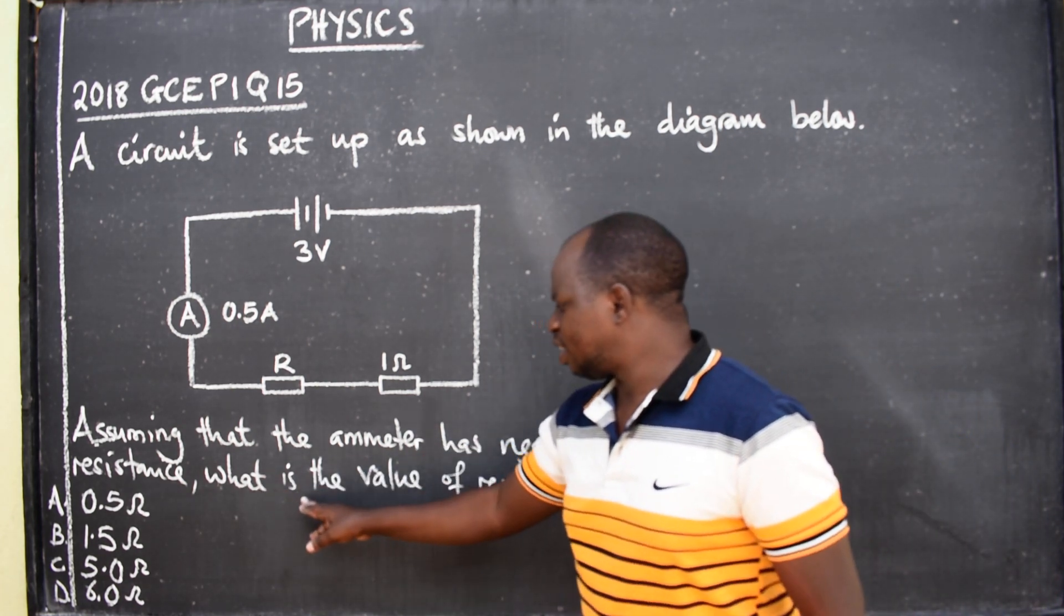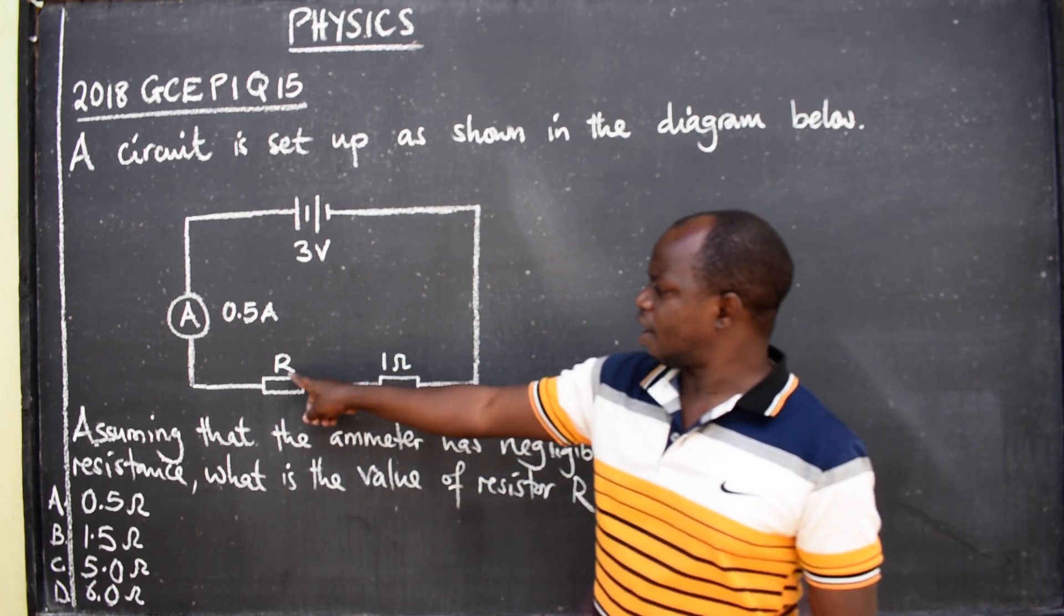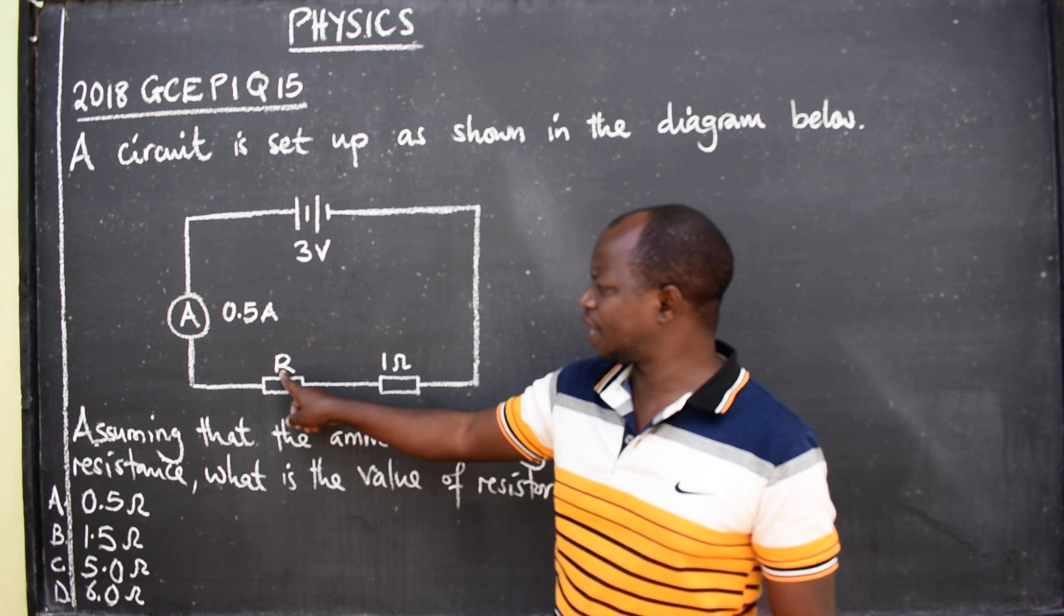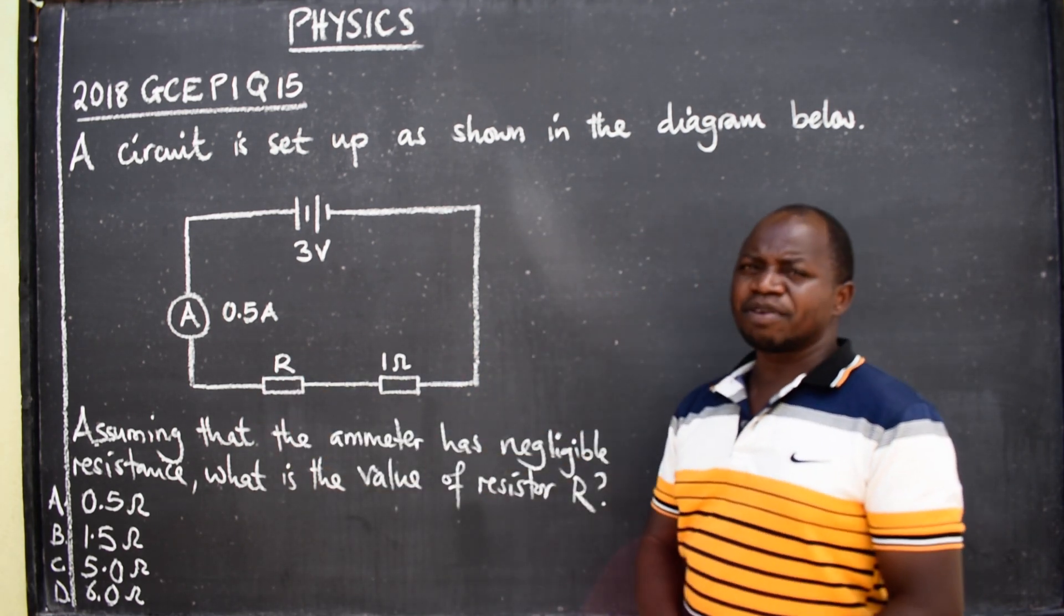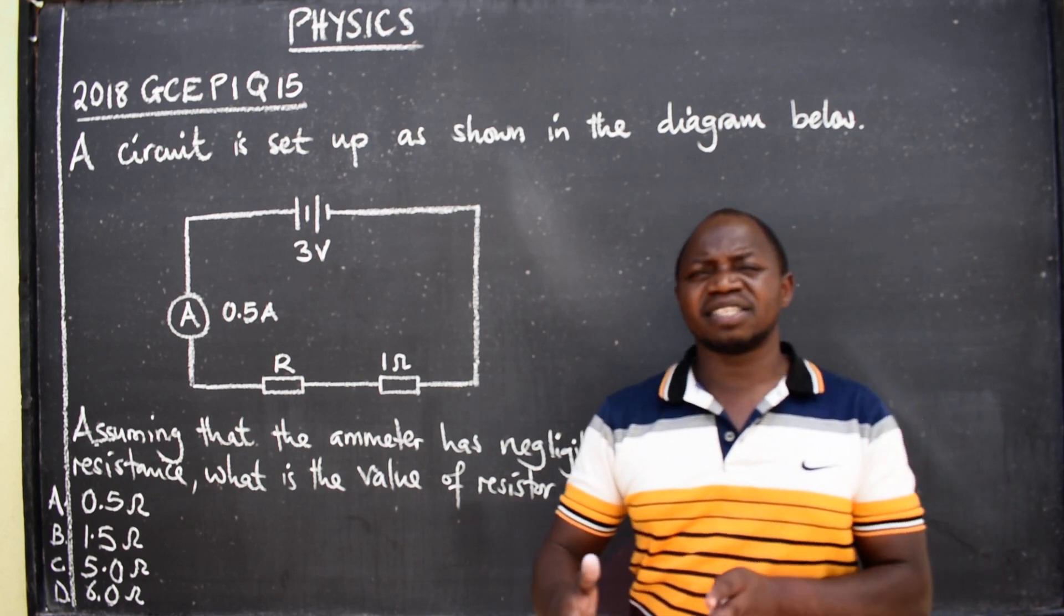So we are taught to find the value of R. Have you seen where R is? For this resistor here. The question is coming from a topic called current electricity.